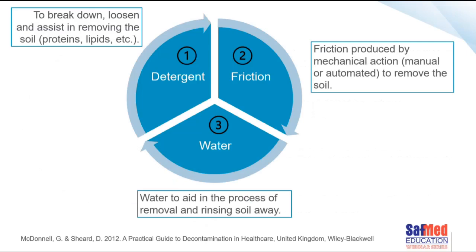As a reminder, we started our series with this slide about what is needed for cleaning to be effective — three important things. We need detergent to break down, loosen and assist in removing soils like proteins and lipids. We need friction, produced either by a manual action like rubbing and scrubbing, or a mechanical action like cavitation in ultrasonic cleaning or the force of water in a washer disinfector. And we need water to aid in removing and rinsing soil away, as well as wetting instruments. The end result is that instruments are at the very least visibly free from dirt, stains or impurities.